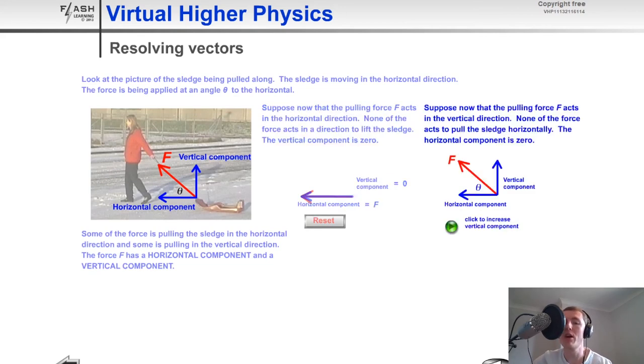Similarly for the vertical component, if we increase the angle θ, the vertical component increases as the resultant force moves towards it, and we now have a horizontal component of zero because there's no vector going horizontally.